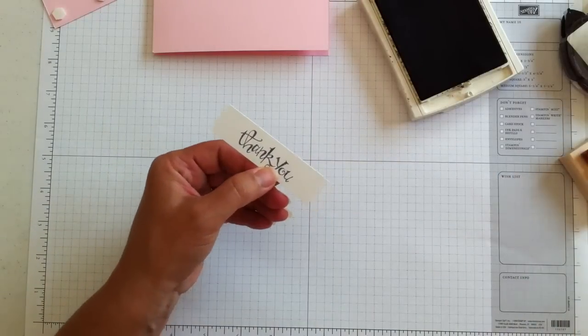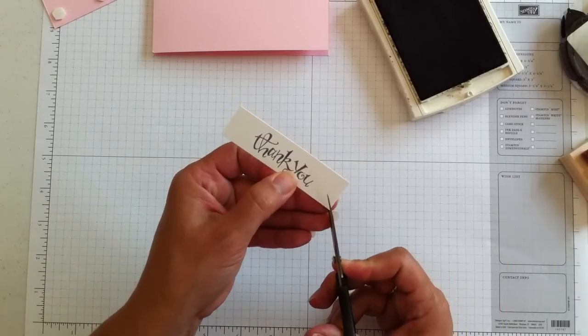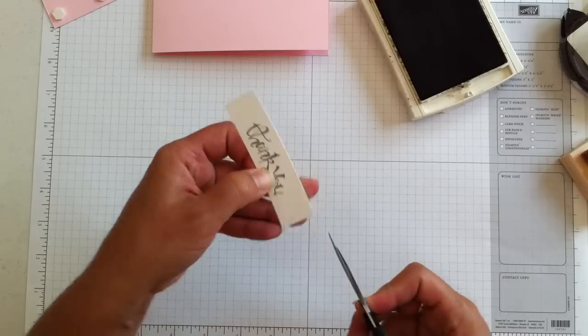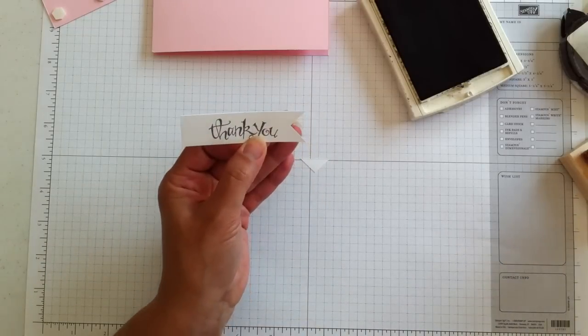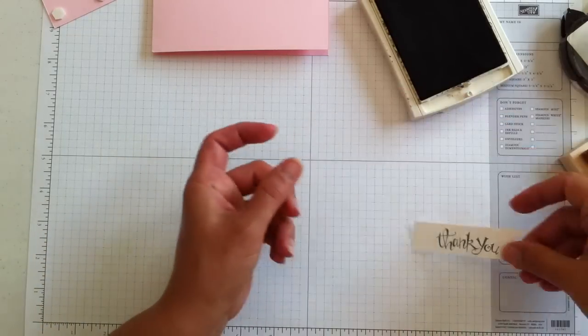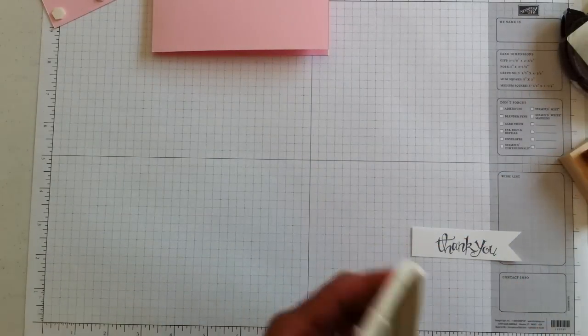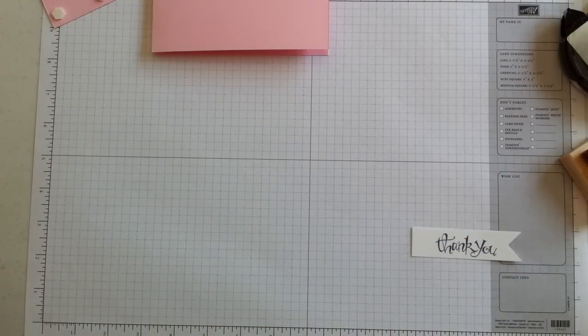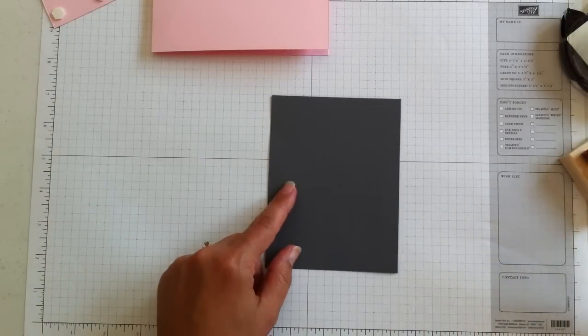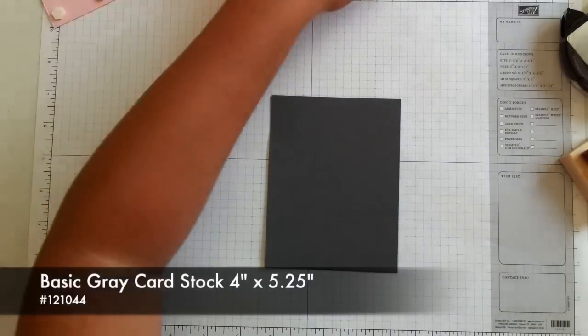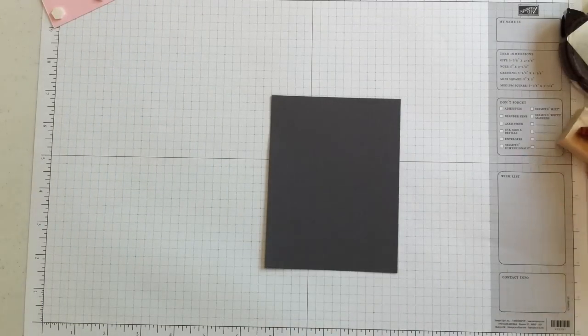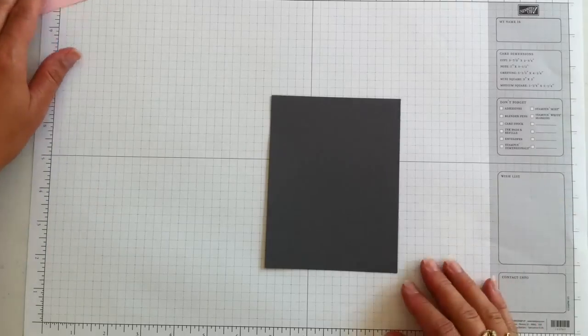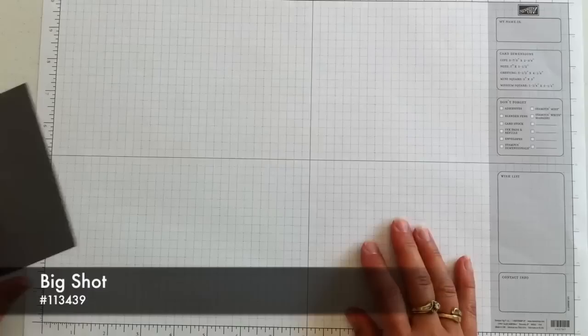And then I'm going to take some of our small paper snips and just notch in the corner. And then for another layer, I've got this piece right here that is basic gray. And it is 4 inches by 5 1⁄4 inches. And I'm going to add some texture on this. So I'm going to pull my Big Shot over quick.